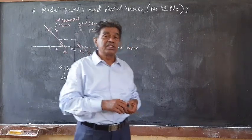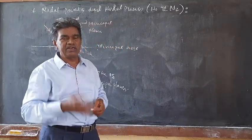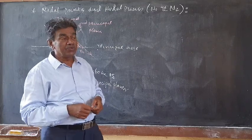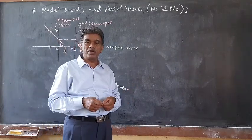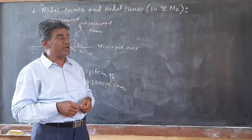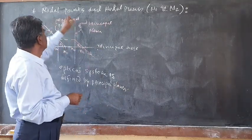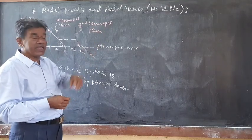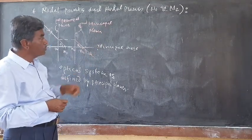Hi students. Last time we saw there are six cardinal points in the optical system — two focal points and two principal points. Today we are going to study the nodal points, that is N1 and N2.